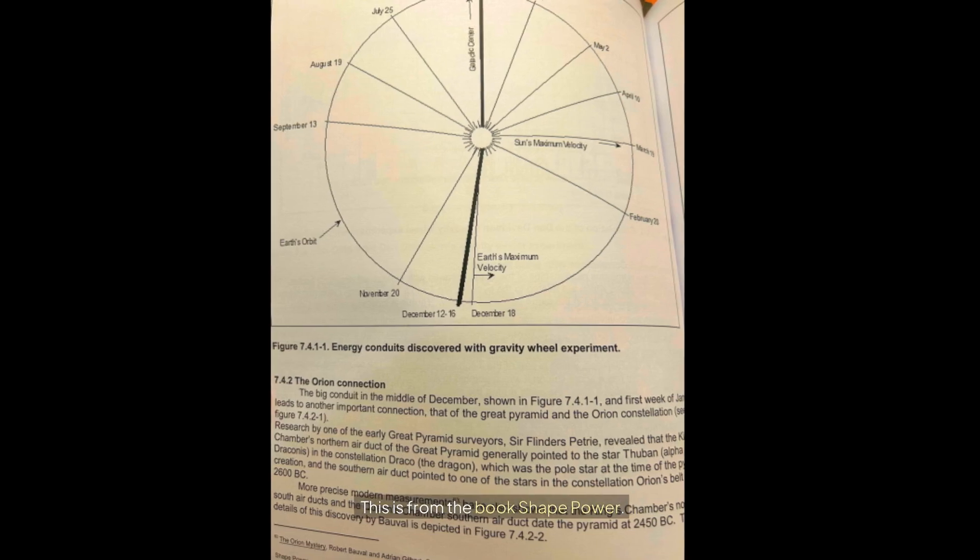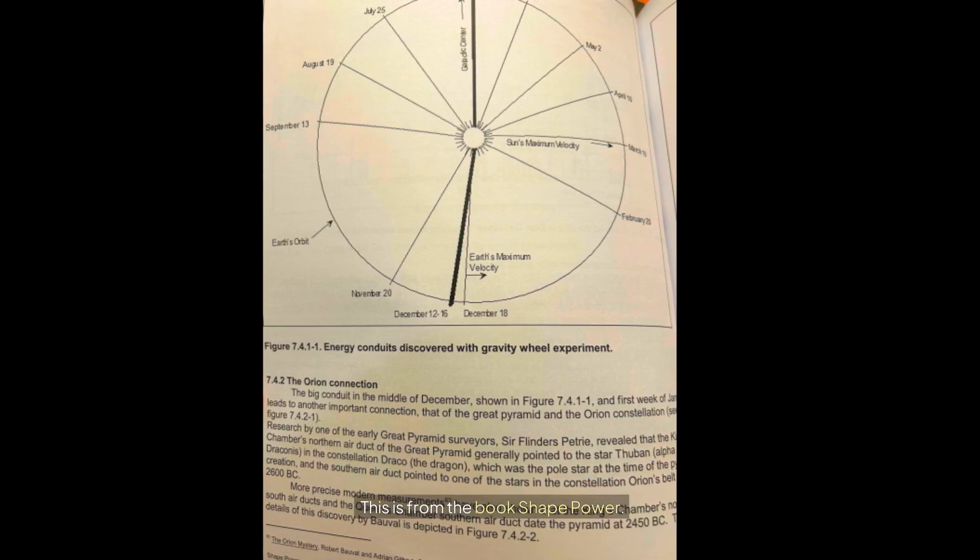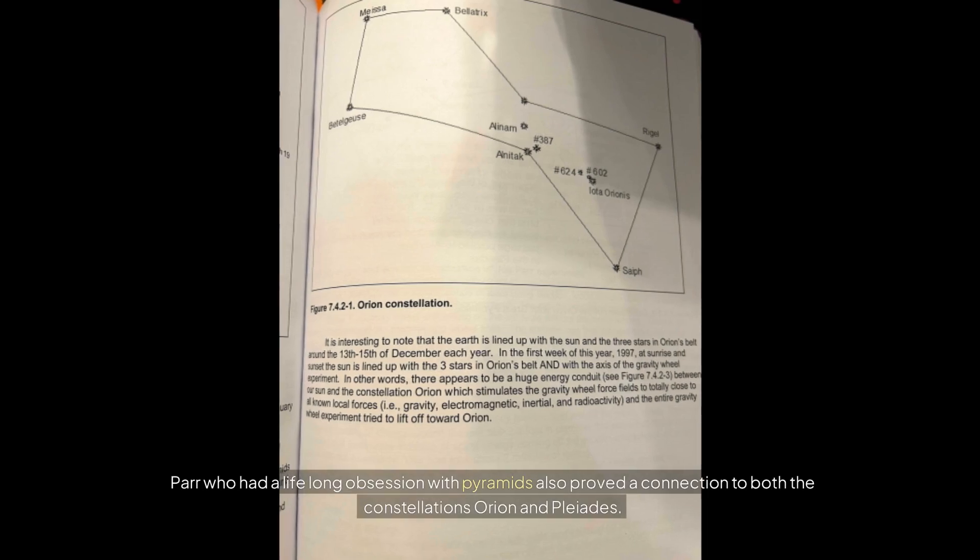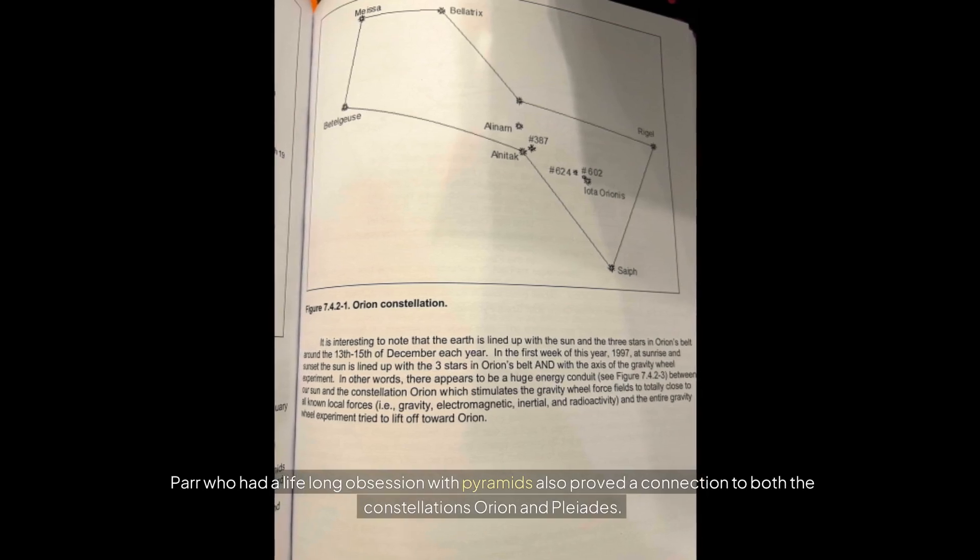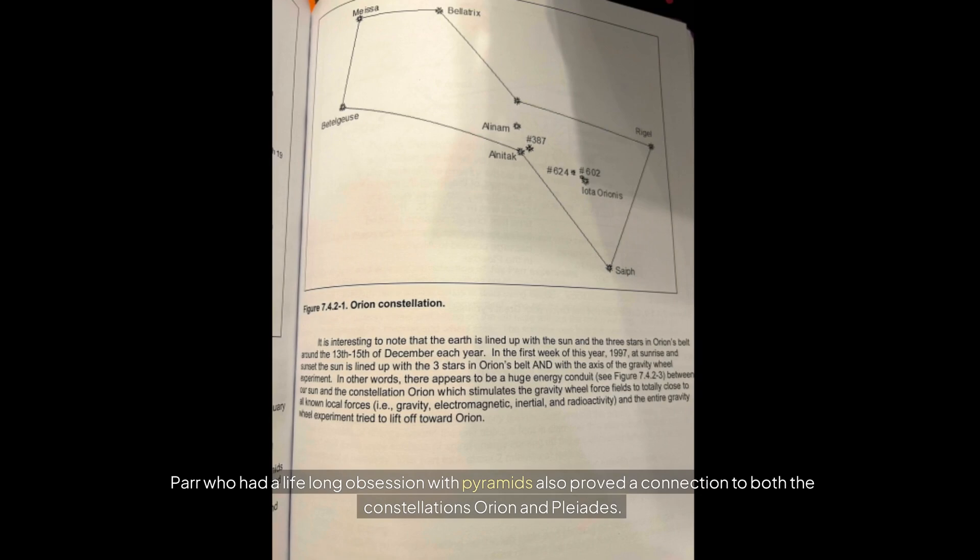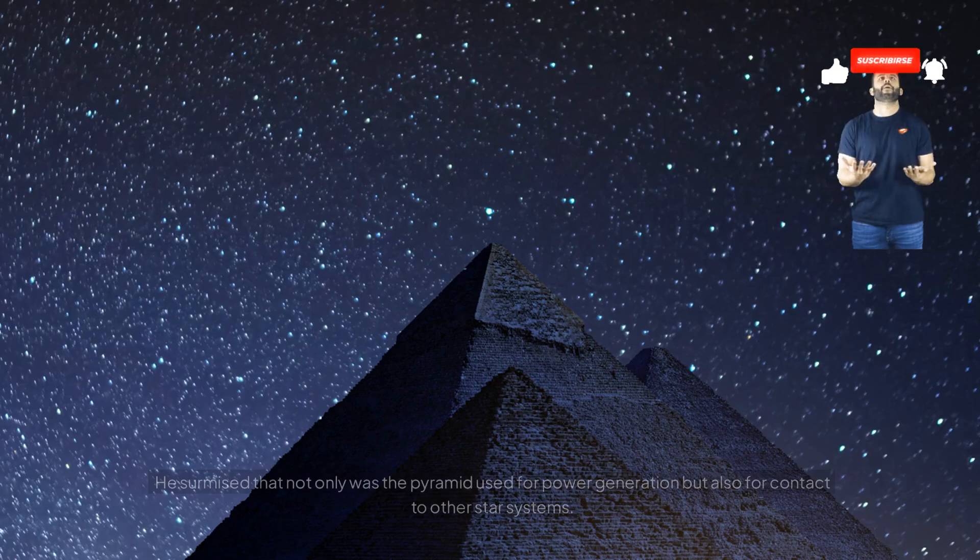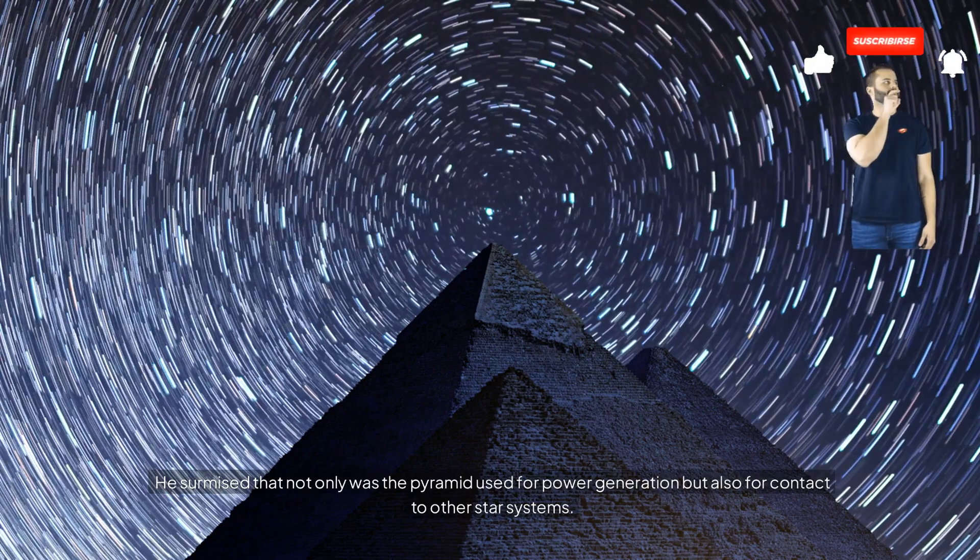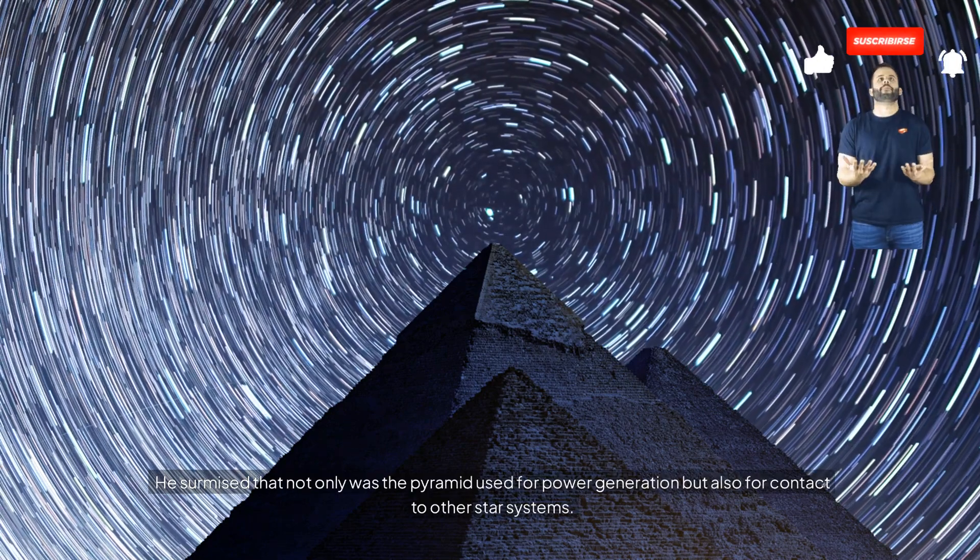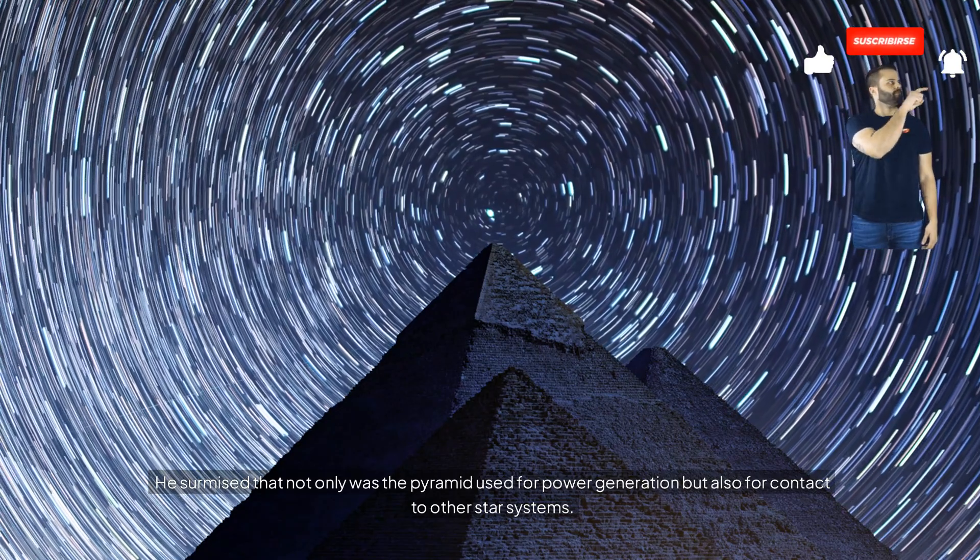This is from the book Shape Power. Parr, who had a lifelong obsession with pyramids, also proved a connection to both the constellations Orion and Pleiades. He surmised that not only was the pyramid used for power generation, but also for contact to other star systems.